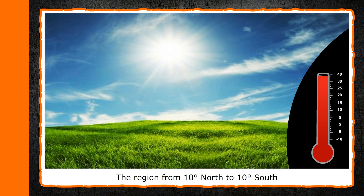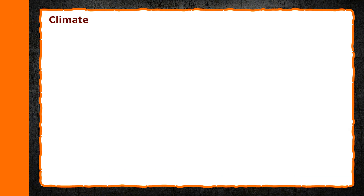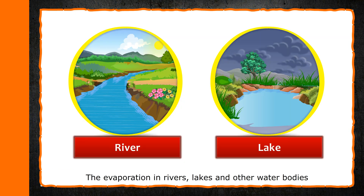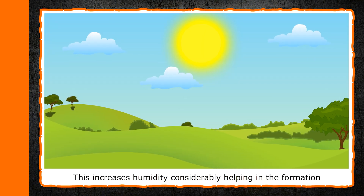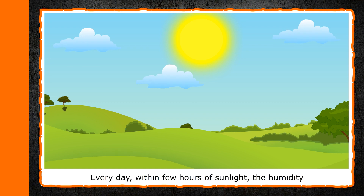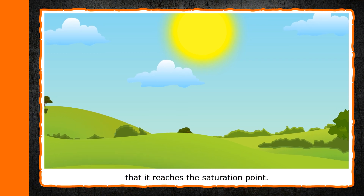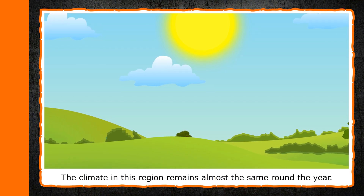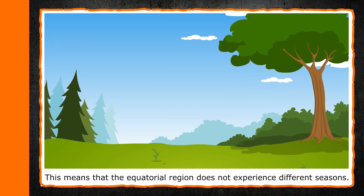The region from 10 degree north to 10 degree south of the equator is called the equatorial region. This region receives maximum sunlight due to its position. This region remains very hot and humid throughout the year. The evaporation in rivers, lakes and other water bodies is very high in this area. This increased humidity considerably, helping in the formation of clouds very quickly. Every day, within a few hours of sunlight, the humidity in the equatorial regions increases to such an extent that it reaches the saturation point, causing precipitation daily. The climate in this region remains almost the same round the year, meaning the equatorial region does not experience different seasons.